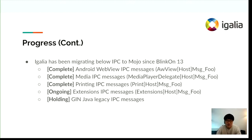Igalia has been working on migrating the legacy IPC to Mojo in other modules since BlinkOn. All IPC were successfully migrated in Android WebView, media, and printing modules. In the printing module case, the next talk presented by Julie will explain it in more detail. We are now working on converting extensions. The GinJava legacy IPC conversion was on hold for a while because there are some issues with the WebView API in the content layer.